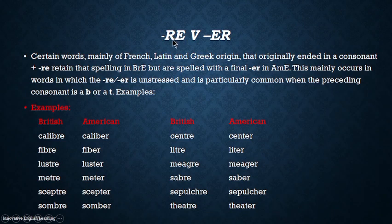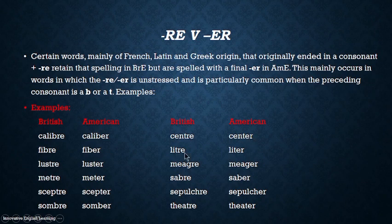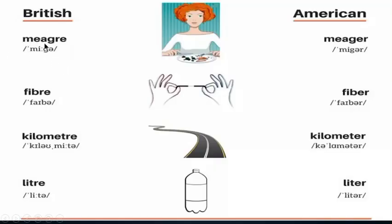Next we have '-re' versus '-er'. In British English we have '-re' while in American we have '-er'. For example: calibre vs. caliber; fibre vs. fiber; theatre vs. theater; metre vs. meter; centre vs. center; litre vs. liter; meagre vs. meager; kilometre vs. kilometer.